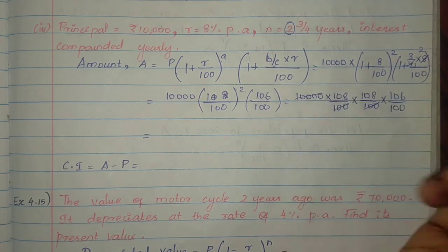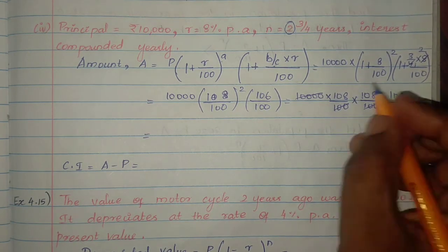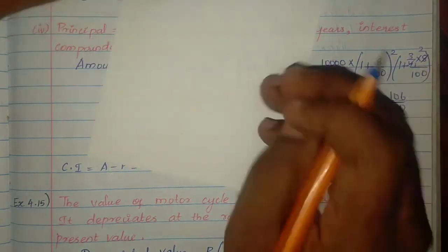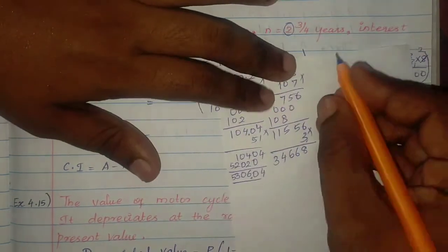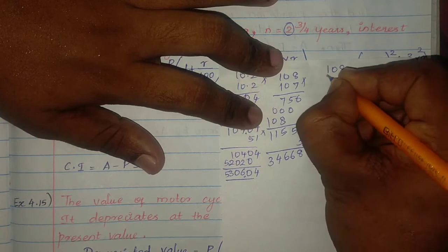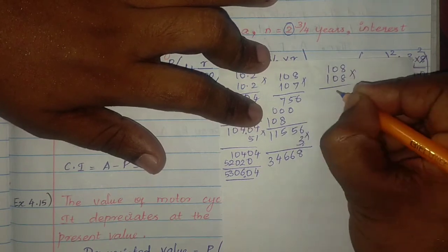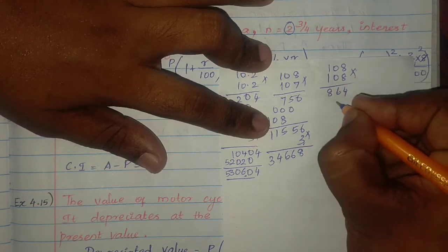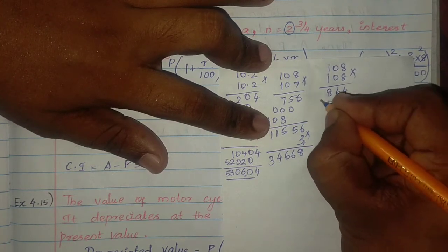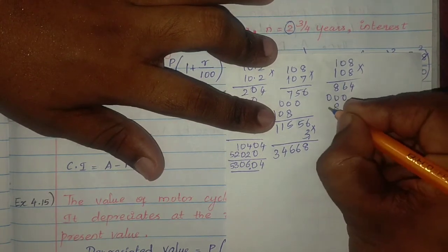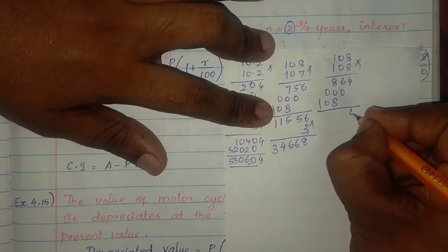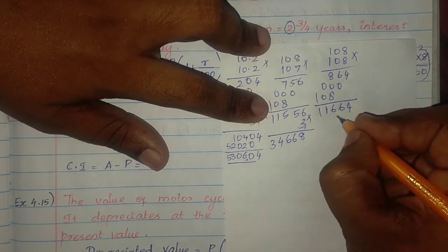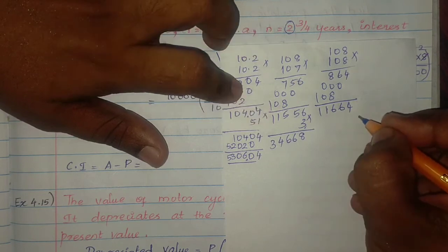Cancelling zeros: 10,000 divided by 100×100×100 leaves a factor for the decimal. Multiply 108 × 108: 8×8=64, 8×1=8, 0 into anything is 0, 1 into anything is same. This gives 11,664.